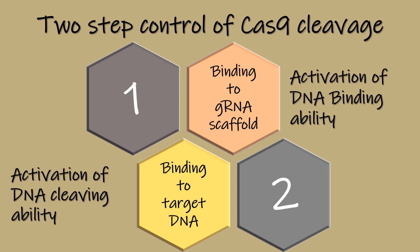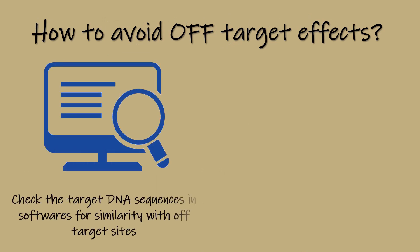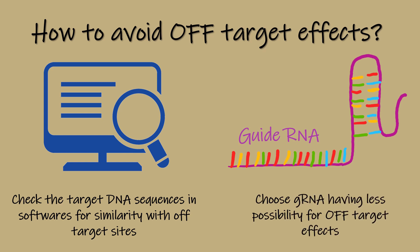However, off-target effects may be seen. Off-target effects can be avoided by using software to check the similarity of the target sequence to other sites in the target genome and by selecting a specific guide RNA.